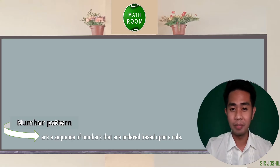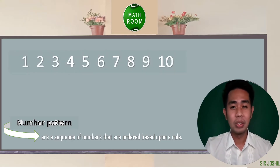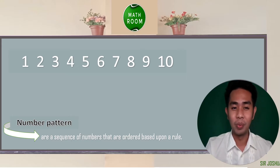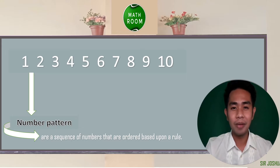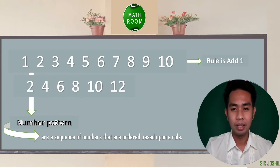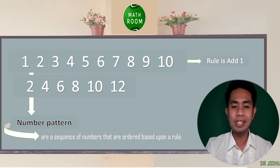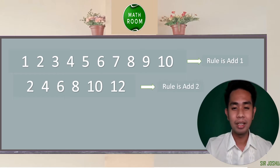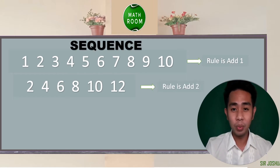When you were in elementary, you were immediately asked to recite the first 10 counting numbers: 1, 2, 3, 4, 5, 6, 7, 8, 9, and 10. That is an example of a number pattern. The rule is simply add 1. Another example of a number pattern is 2, 4, 6, 8, 10, and 12 — the first 6 even numbers. The rule is simply add 2. Those are what we call a sequence, or simply a number pattern.